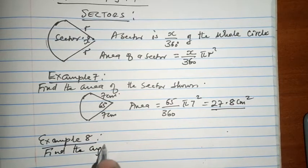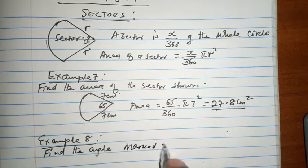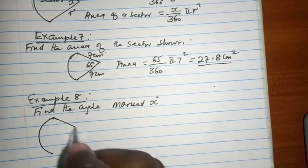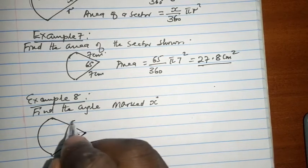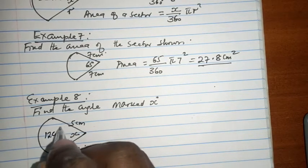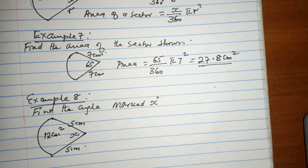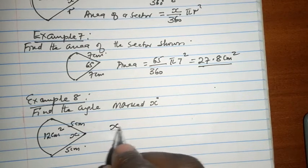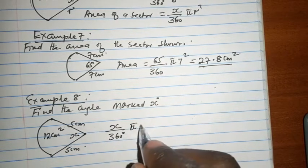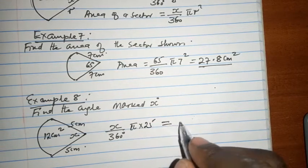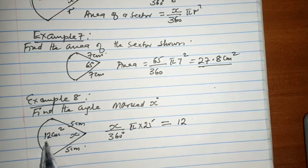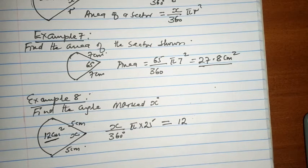In example 8, we are supposed to find the angle marked x degrees. This angle marked x degrees is at the center of a circle with radius 5 cm, and the area is 12 cm squared. The angle at the center x, out of the possible 360 degrees, pi r squared times 25, this is what is giving us 12, because this is the area of the sector of a circle.